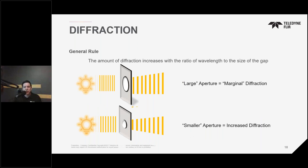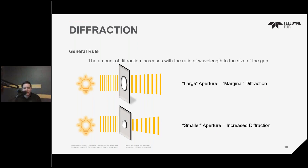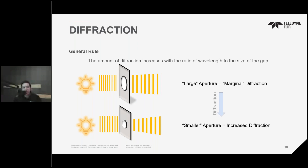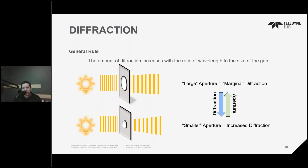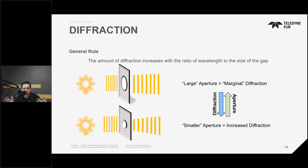If we consider a constant wavelength of light and decrease the size of the aperture, the result is an increase in diffraction effects — they're inversely proportional. If the aperture were constant and we continually increased the wavelength of light passing through, we'd see increasing diffraction as well. The world isn't made up of monochromatic light sources, unless you're working with a specific laser. You almost always have a variety of wavelengths passing through the lens and the aperture.